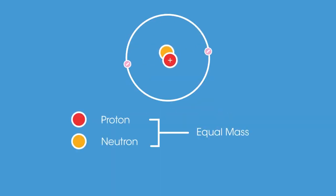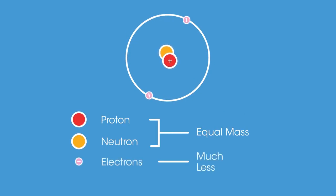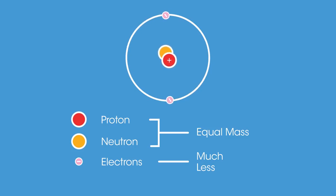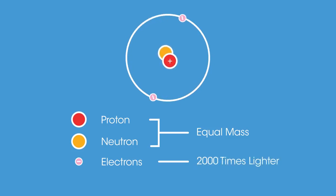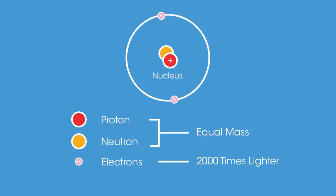So that's the general structure of an atom. What about its mass and size? Protons and neutrons have the same mass, but electrons are so small they weigh almost nothing in comparison. In fact, electrons are around 2,000 times lighter. As a result, the mass of an atom is concentrated at its nucleus.